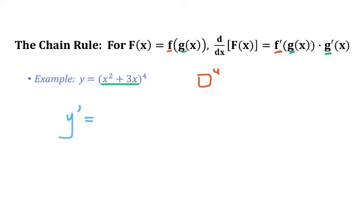The derivative of a quantity to the power of 4 would be 4 times the quantity to the power of 3. We're reducing the power by 1, so we've evaluated it at the inner function, and now we multiply by the derivative of the inner function. The derivative of x²+3x is 2x+3. And that is what the chain rule looks like.